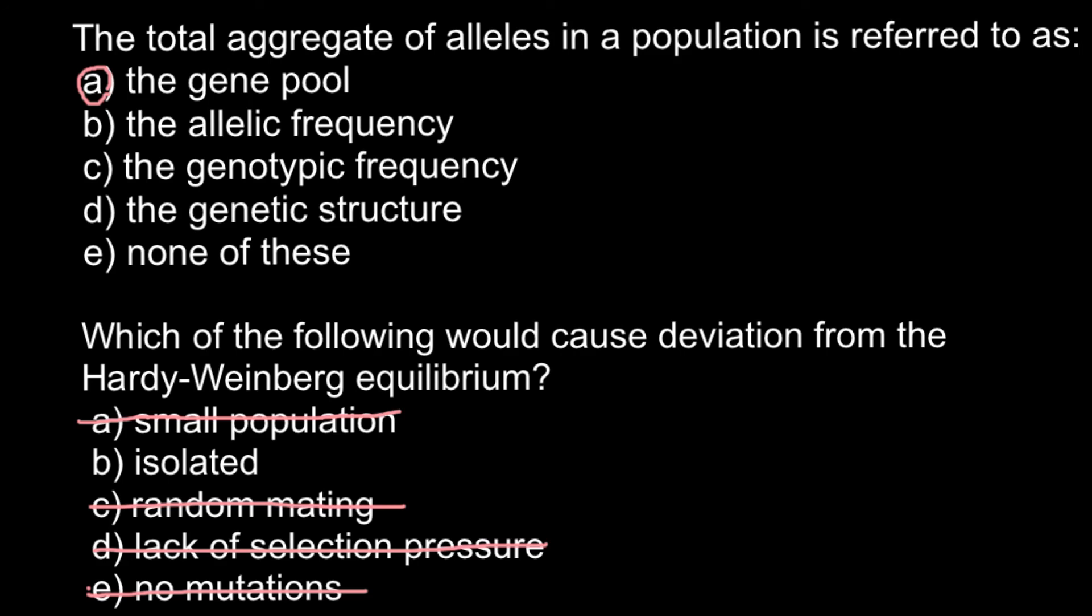But an isolated population, if it is large enough with no migration, would give us an idealized population that would be in Hardy-Weinberg equilibrium, where from one generation to another generation there would be stability in the allelic frequency. So our choice for the second answer would be B.